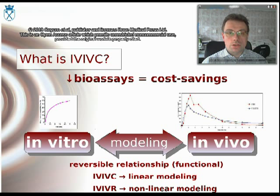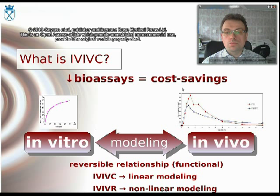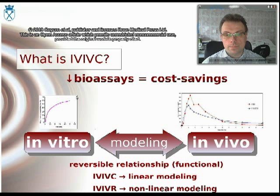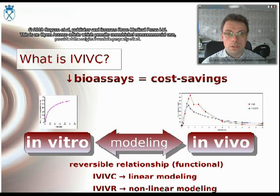In-vitro-in-vivo correlation, IVIVC, in its classical approach, is a mathematical model designed to predict the in-vivo measured pharmacokinetic profile based on the in-vitro measured dissolution profile of the particular drug of interest. This formula is used by the pharmaceutical industry for cost-saving purposes because, once it is established, it allows reducing the demand for prospective bioassays.